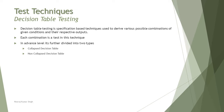At the advanced level we'll understand this technique in more detail beyond the foundation level. Specifically, this technique will be further divided into two categories called the collapsed decision table and the non-collapsed decision table.